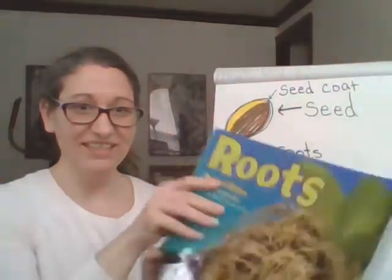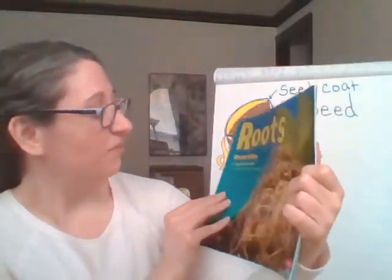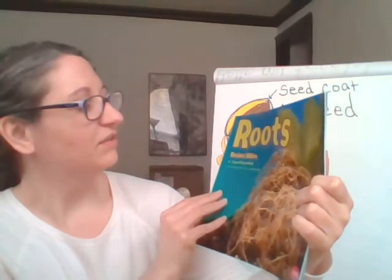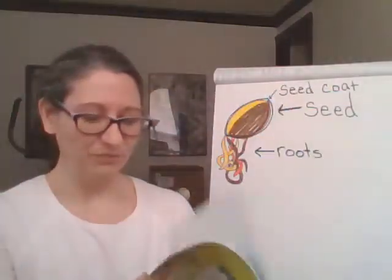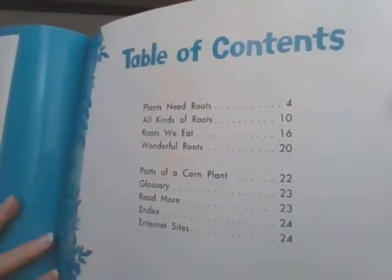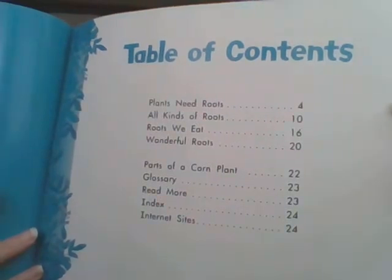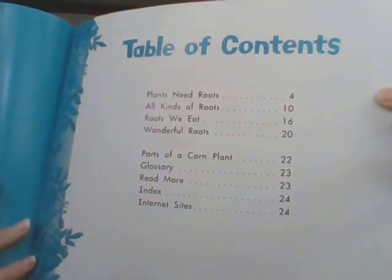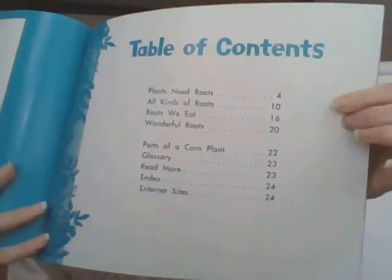We are going to read 'Roots' by Vijaya Kristi Bodak. Here's the table of contents — remember, the table of contents tells you what page the different sections are on. Can you tell me what page we would find 'Roots We Eat'? Yes, we would start on page 16.